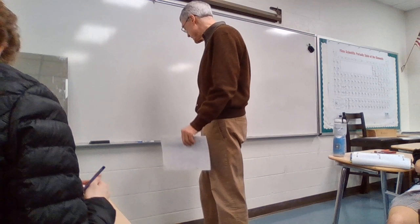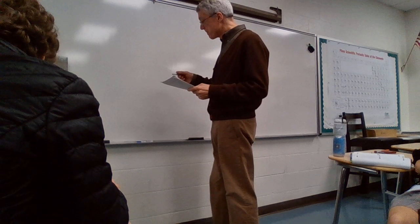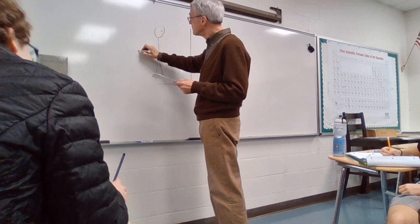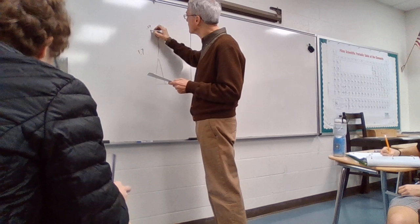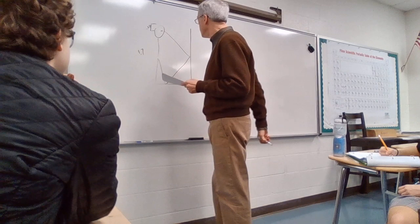We're doing homework number six first. A person whose eyes are 1.7 meters above the floor stands in front of a plain mirror. The top of her head is 0.12 meters above her eyes. Part A: what is the height of the shortest mirror in which she could see her entire image? Part B: how far above the floor should the bottom edge of the mirror be placed?